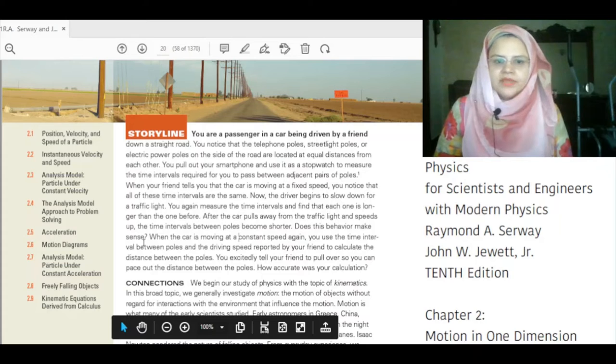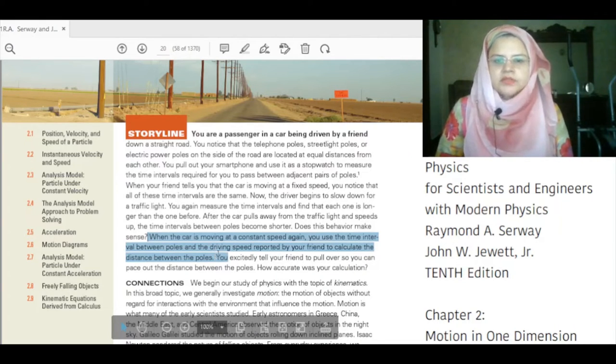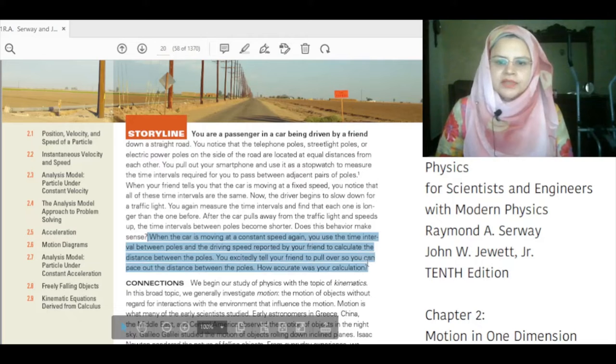When the car is moving at a constant speed, you use the time interval between the poles and the driving speed reported by your friend to calculate the distance between the poles. You excitedly tell your friend to pull over so you can pace out the distance between the poles. How accurate was your calculation?